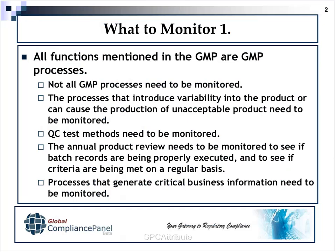The initial question that comes up is: what should you monitor by statistical process control? People will tell you that you need to monitor GMP processes, but not all GMP processes need to be monitored. Basically, you're looking at the processes that introduce variability into the system, and this can also include things like test methods. Your annual product reviews need to look at your batch records to see if they're being properly executed and if there are any problems.